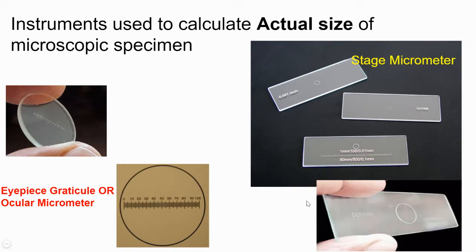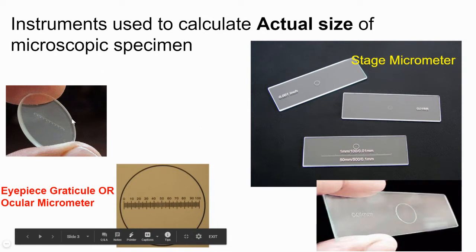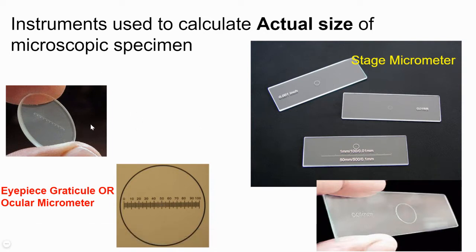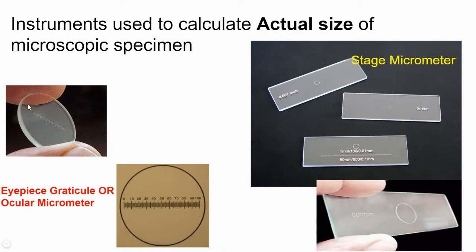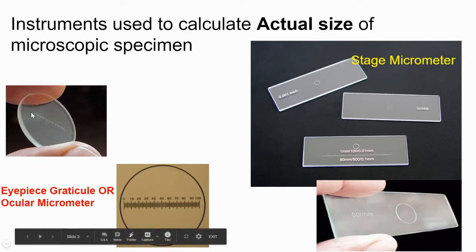On your screen right now are images of the eyepiece graticule and stage micrometer. Both are glass objects which contain tiny microscopic scales, and they are used to measure the actual size of specimens under the microscope. Eyepiece graticules have different names: in the Cambridge syllabus they are called eyepiece graticule or EG, while in other syllabi the term ocular micrometer is used — 'ocular' meaning eye, as it is present in the eyepiece lens close to your eye.